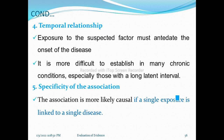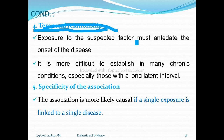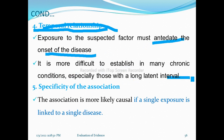The fourth criterion is temporal relationship — this is very important and should be checked first. The exposure to a specific factor must antedate or precede the onset of disease. It is more difficult to establish in chronic conditions, especially those with long latent intervals. The risk factor or exposure should always precede the effect.